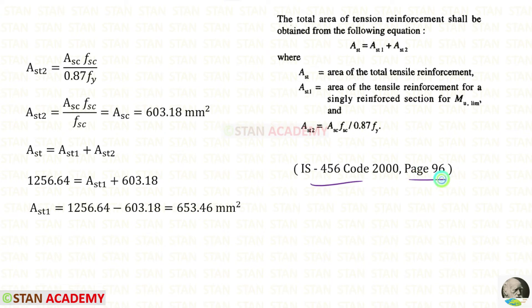Let us open the code book page number 96. AST will be equal to AST1 plus AST2. Here AST2 is ASC FSC upon 0.87 FY. Let us write that. Just before we know that 0.87 FY is FSC. We can apply that. We can eliminate FSC. In this case AST2 and ASC will be same.